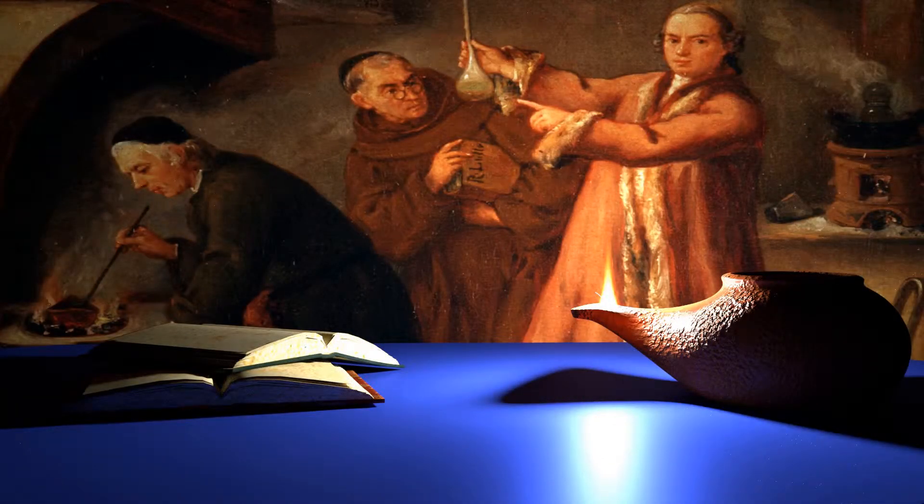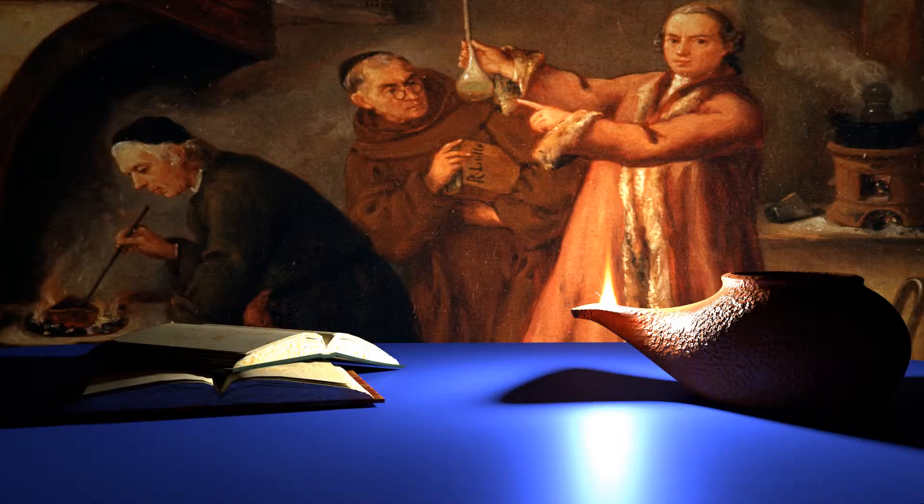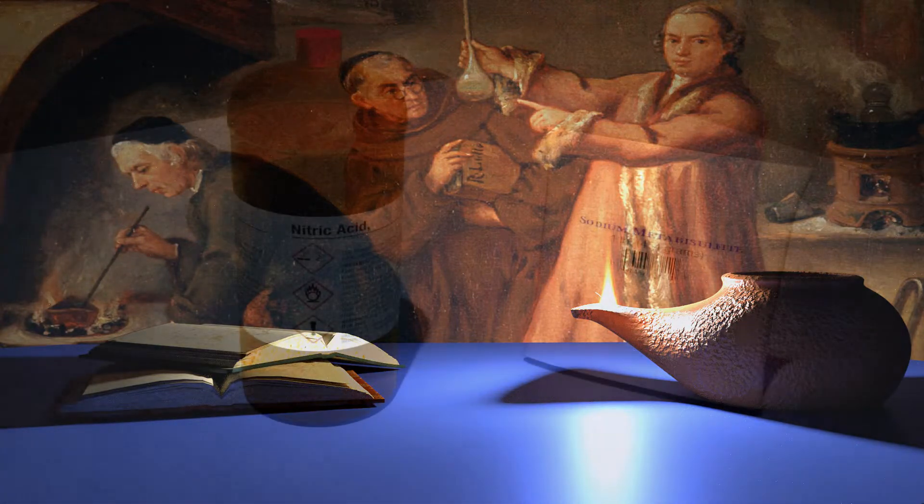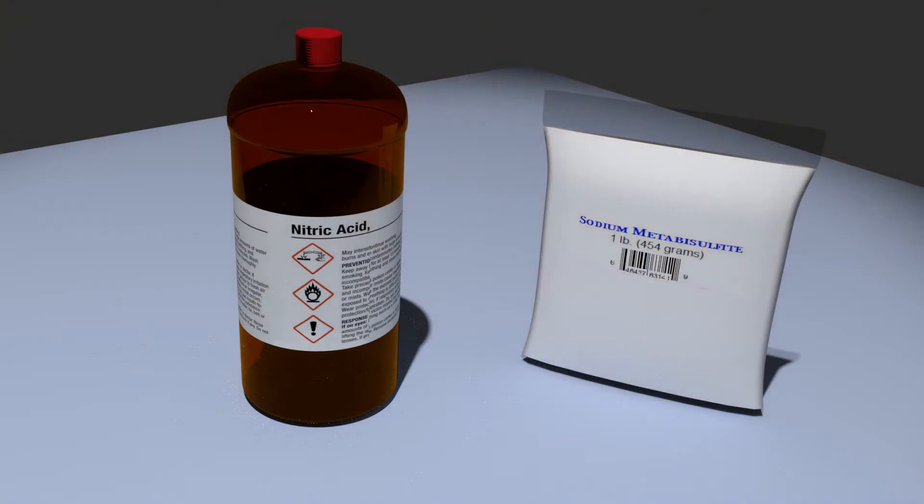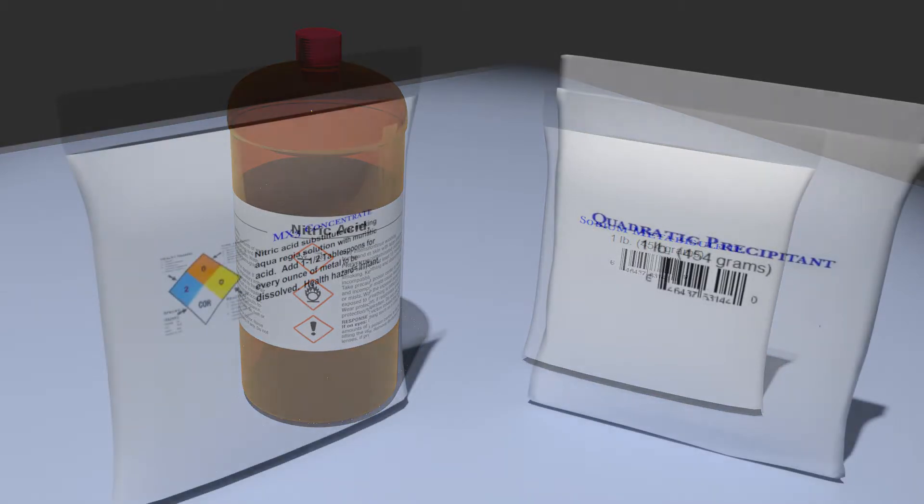The aqua regia process dates back over a thousand years and has traditionally used nitric and hydrochloric acids, as well as toxic and corrosive precipitants. Shor R&D has developed non-toxic, effective substitutes for both nitric acid and the precipitant.